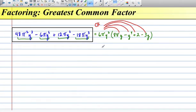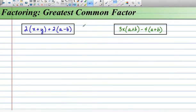and we have 48π squared y cubed, minus 6πy to the 6, plus 12πy squared, minus 18πy cubed. So we're right!